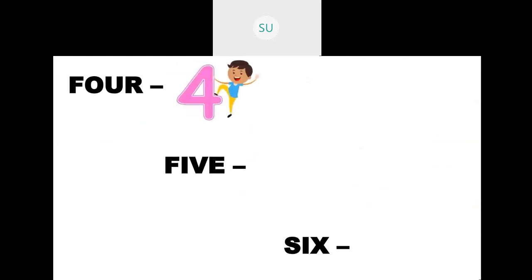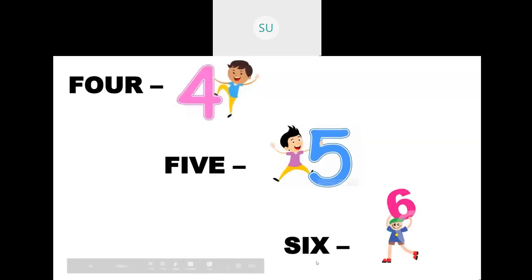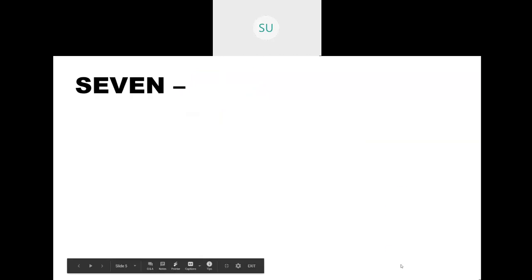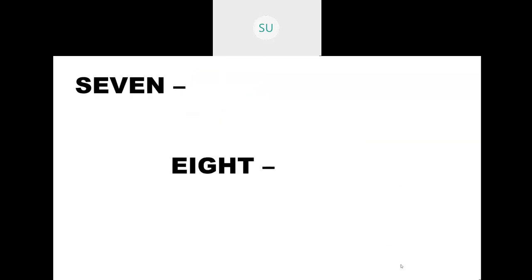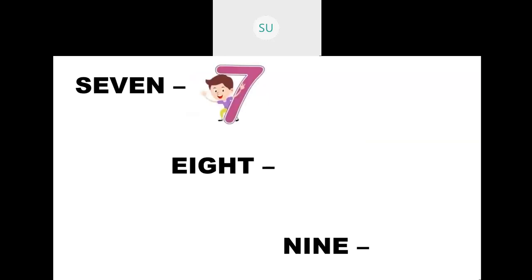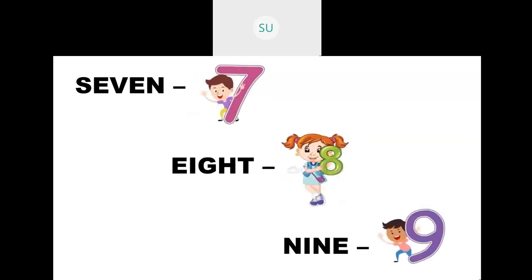So 4 is FOUR, 5 is FIVE, and 6 is SIX. Then we have 7, S-E-V-E-N, then E-I-G-H-T is 8, and N-I-N-E is 9. So 7 is SEVEN, 8 is EIGHT, and 9 is NINE. Correct.